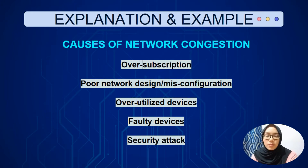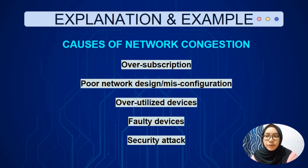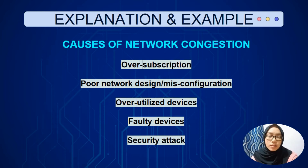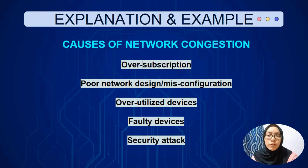This is Nuri Hazika, 1182641. Now, we will continue with causes of network congestion. First is over-subscription. This occurs when a system is handling traffic more than it was designed for. For example, during peak period, there are more users than during off-peak period.